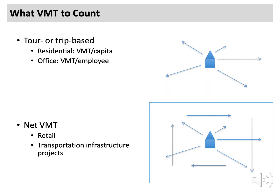Residential and office projects add new residents and workers, so those land uses generate and attract new trips. Trip and tour-based approaches are the best methods for assessing VMT from such projects, and they make possible comparison to VMT thresholds connected to the state's science-based GHG emissions reduction targets. OPR recommends analyzing VMT per capita for residential projects and VMT per employee for office projects.